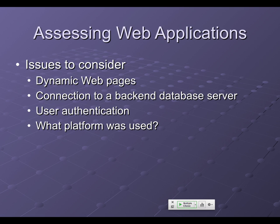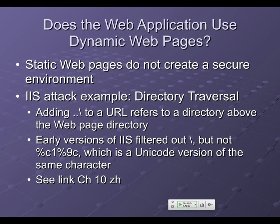If you have a web application and want to see how secure it is, there are a lot of issues to consider: connections to the backend server, authentication, and more. Directory traversal is a common one where you use dot-dot-slash to move up to other directories and get into a directory you're not supposed to be in. It turns out to be a lot harder to stop these things than you'd think — if you try to filter out dot-dot-slash, there are ways to encode those characters so they don't look like dot-dot-slash but are interpreted that way at the server.